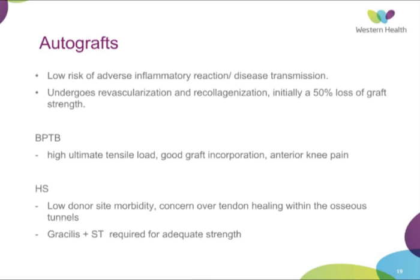With bone-patellar-tendon-bone, it has a very high ultimate tensile load and good graft incorporation due to bone ingrowth. However, its main complication is anterior knee pain. The hamstring graft has low donor-site morbidity, though there is more concern over tendon healing within the osseous tunnels. We use gracilis and semitendinosus, and both are required for adequate strength as they each contribute about 50% of the strength of a normal ACL.